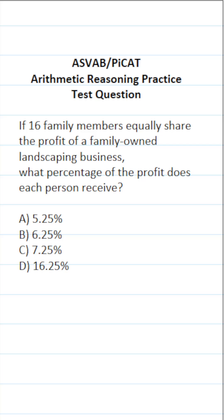This arithmetic reasoning practice test question for the ASVAB and PICAT says, if 16 family members equally share the profit of a family-owned landscaping business, what percentage of the profit does each person receive?